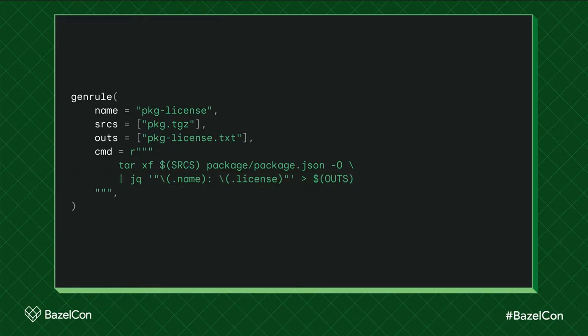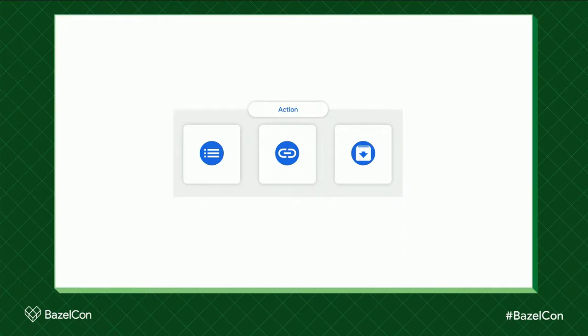In reality this could be something more complex, like a gen rule that invokes a third-party build system to build some dependency. I'm using a gen rule for illustration here, but this extends to any kind of action that invokes other tools — a custom rule with a shell snippet, or a rule that invokes a runner binary like a Python binary that invokes other tools.